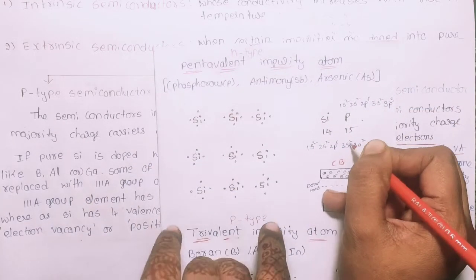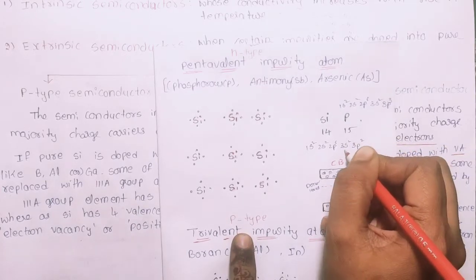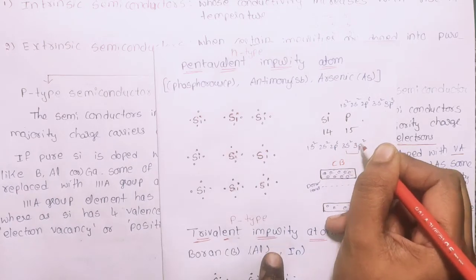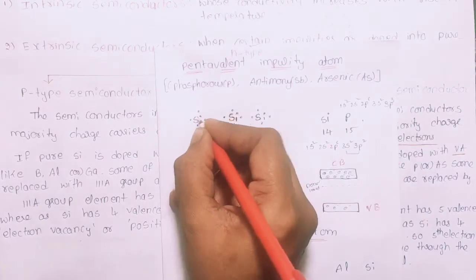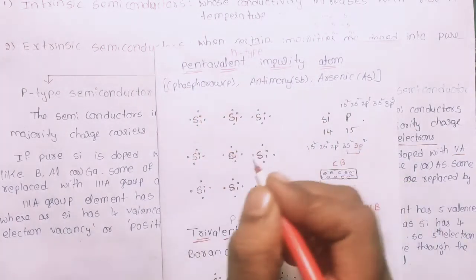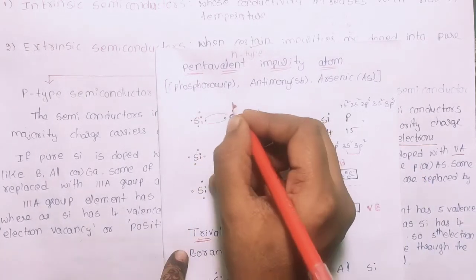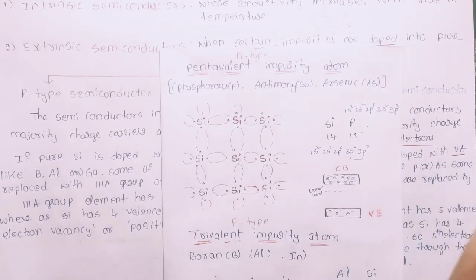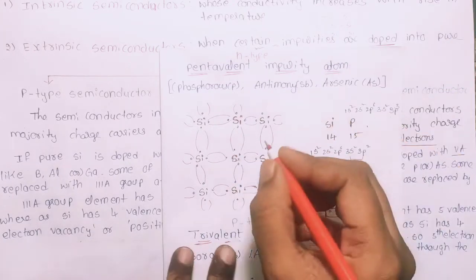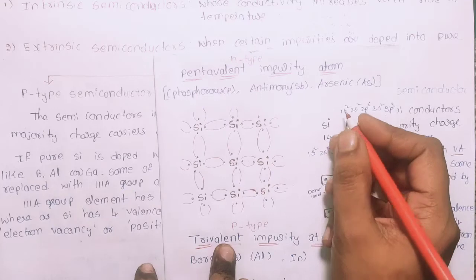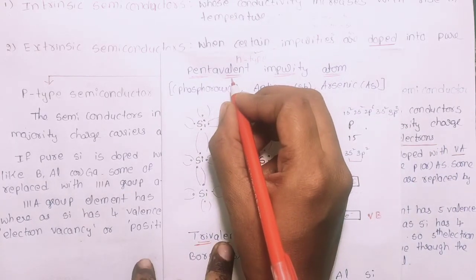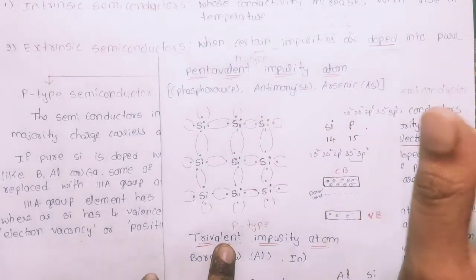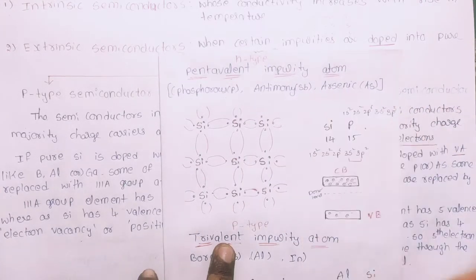Silicon has 4 electrons in its last valence shell, with configuration 2s2, 2p6, 3s2, 3p2 — giving 4 valence electrons. When we add a pentavalent impurity atom such as phosphorus, antimony, or arsenic — which have 5 electrons in their valence shell — to the pure semiconductor, the impurity atom replaces a silicon atom.